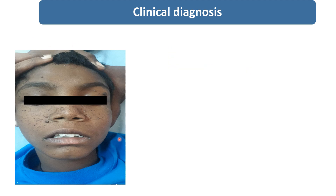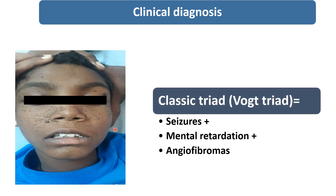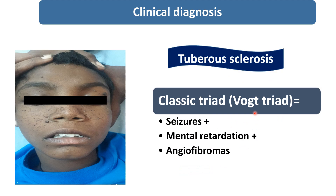The patient came to our OPD with the main complaint of having seizures. Whenever a child is having seizures with low IQ and facial angiofibroma, as in our case, this is labeled as the Vogt triad. It is present in tuberous sclerosis. The child was having generalized tonic-clonic seizures since the first year of life and also having low IQ and mental retardation, with the characteristic skin lesion you can see over the face.